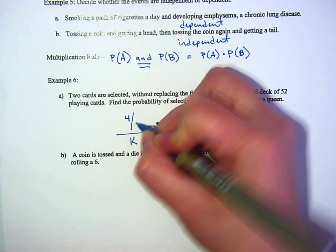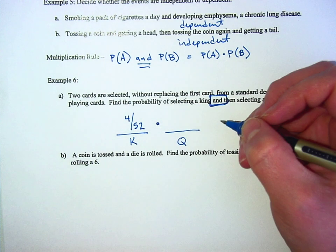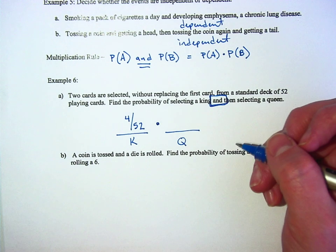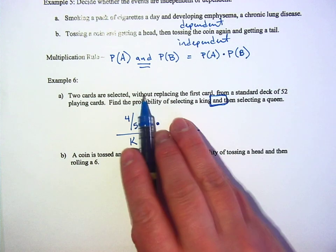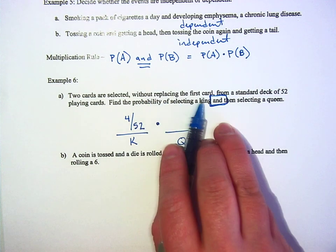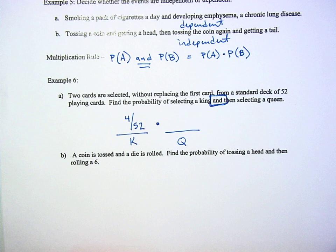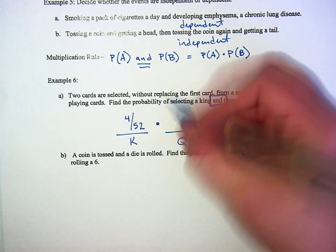And Triton, what's the probability of getting a queen? But we threw away the card, because it says without replacing the first card. So we took the king and we didn't put it back. So that would be 4 out of 51. Good.